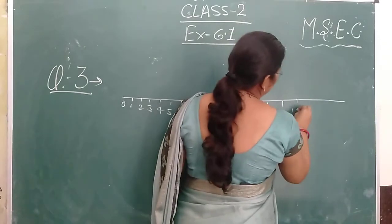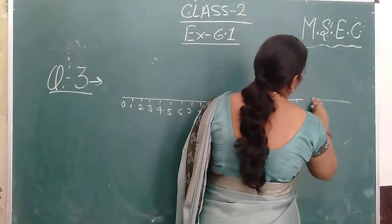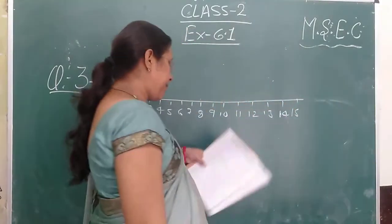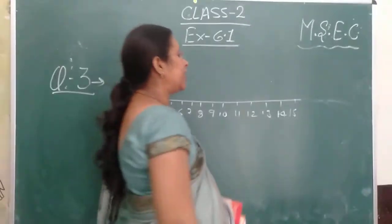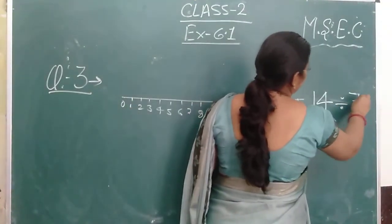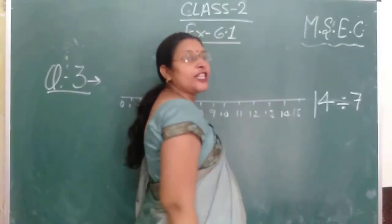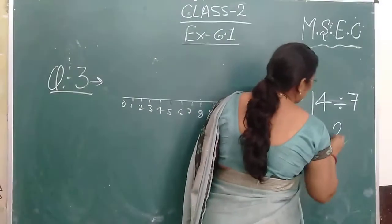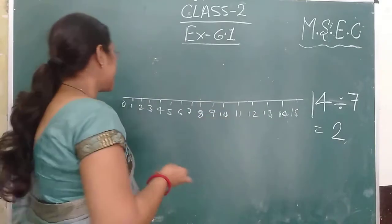Now I have 14, and we will divide the number line. So that's how we divide the number line. When you divide the number line, 7 is equal to the number line. So let's divide the number line.